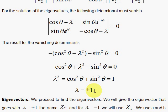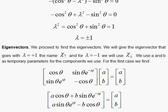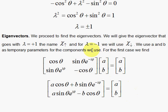This is the same result we got when we looked at the sigma sub x eigenvalue problem, and it's true in general. So let's find one of the eigenvectors — specifically the one where the eigenvalue is plus 1. Using a and b for the upper and lower components, this matrix operating on a and b gives the same thing back with plus 1. The first condition is: cosine theta times a plus sine theta e to the minus i phi times b equals a.